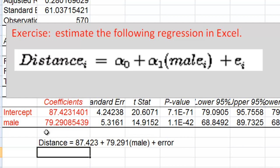Such that if we were actually predicting hitting distances where we don't know the error, we would go predicted distance equals 87.423 plus 79.291 times male.